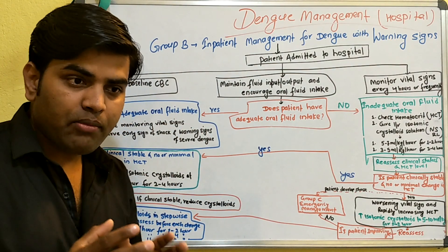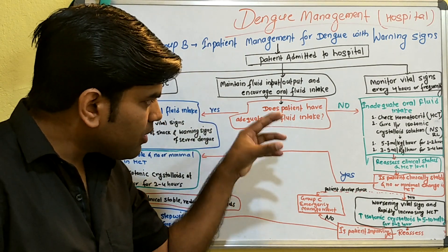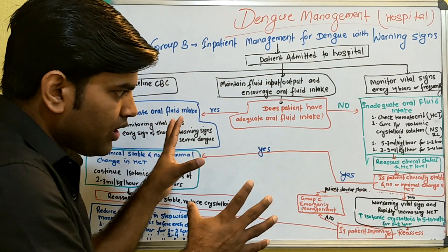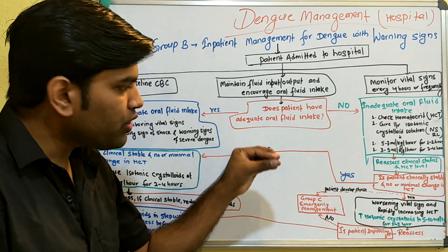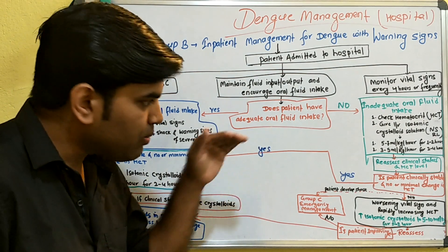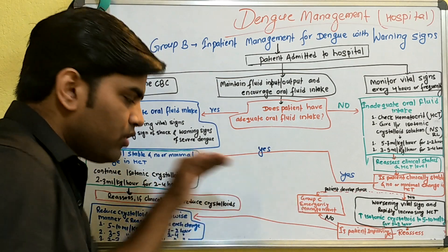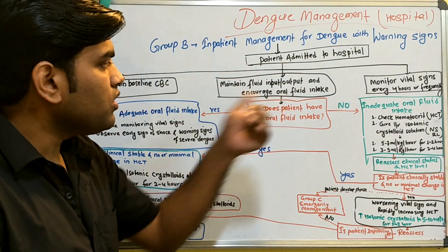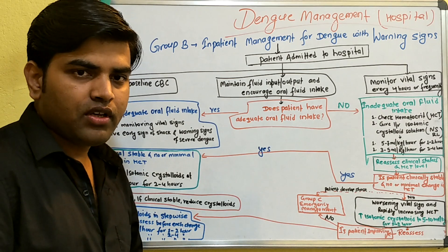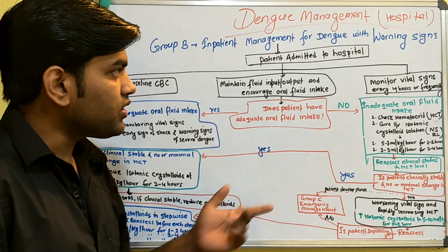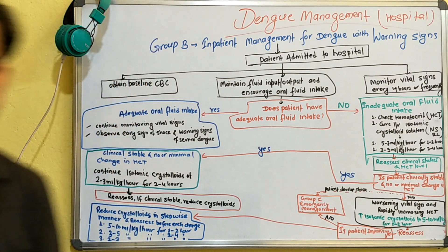This management follows the CDC guideline. The key principle is not to give a large amount of fluid all at once — give fluid incrementally, and if the patient is improving, taper the rate and encourage oral fluid intake. See you in the next lecture.